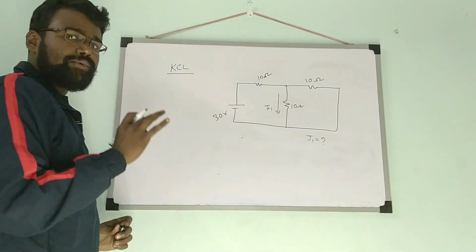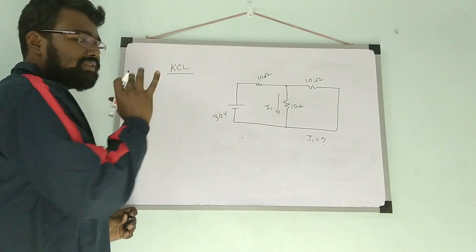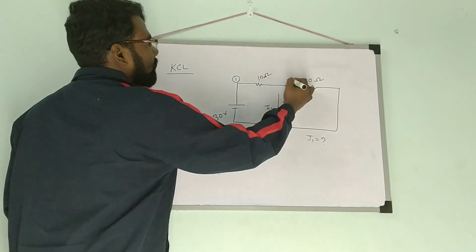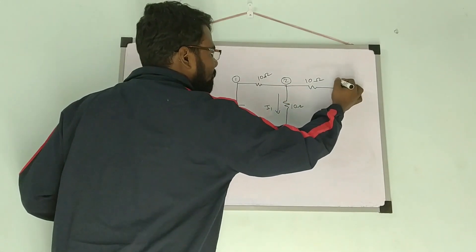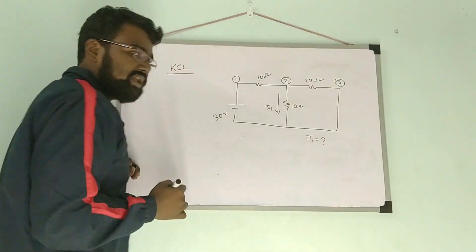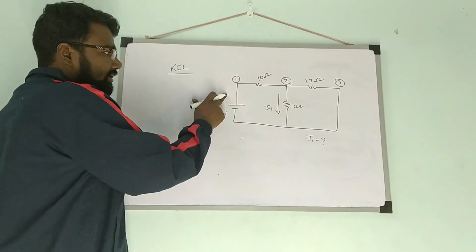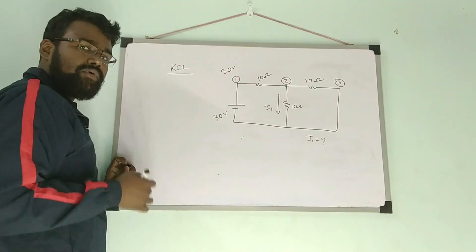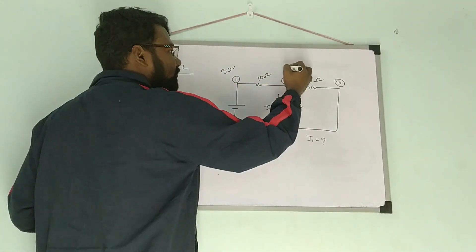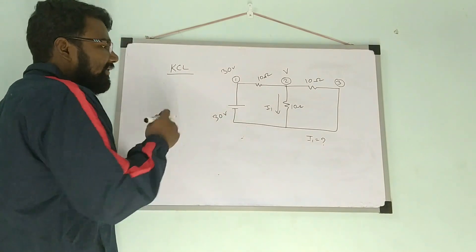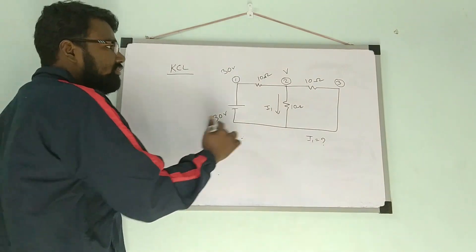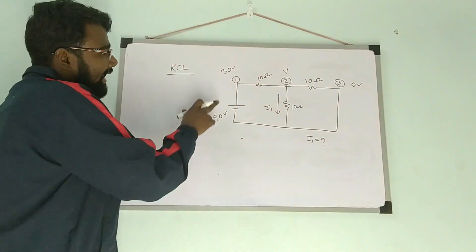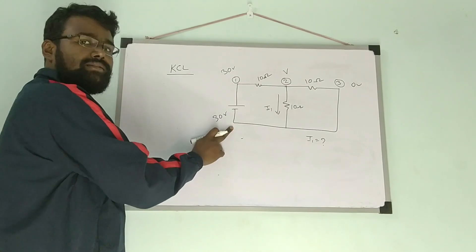First, we have to consider how many nodes there are. There is node 1, node 2, and node 3. The voltage at node 1 is 30 volts. The voltage at node 2 is unknown — this is V. And the voltage at node 3 is 0 volts. Why is this 0 volts? As this is 30 volts, then this is 0 volts.